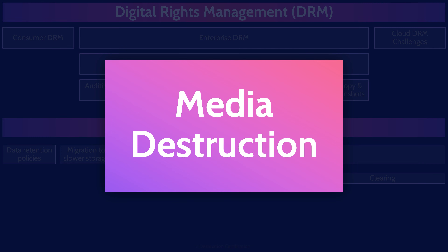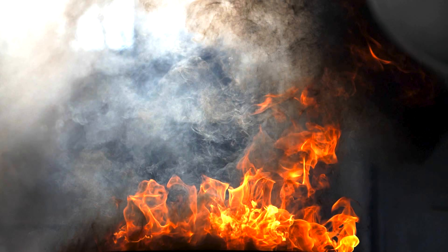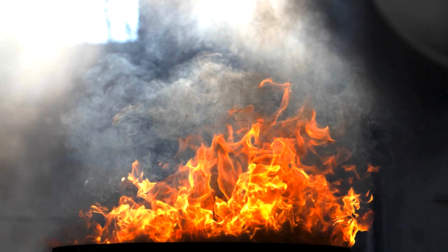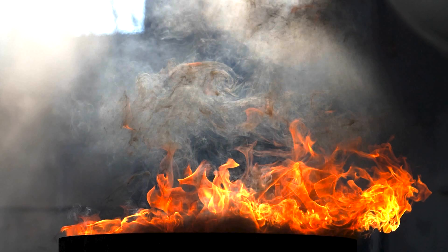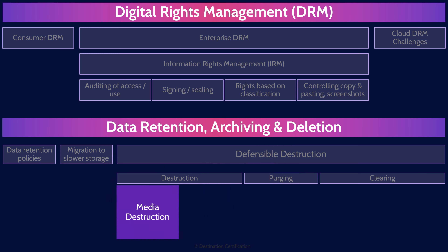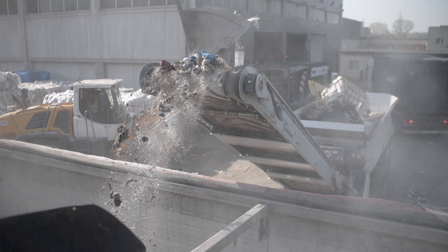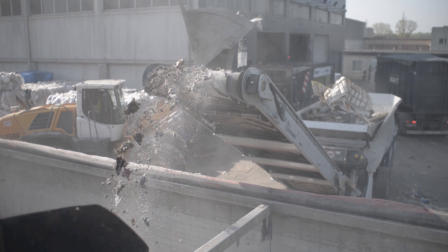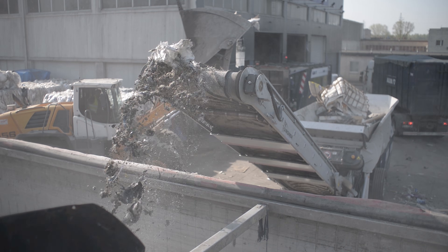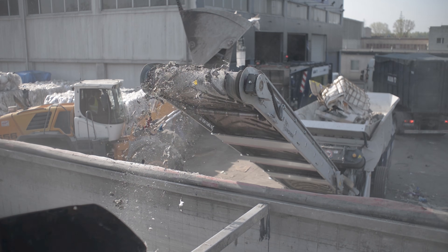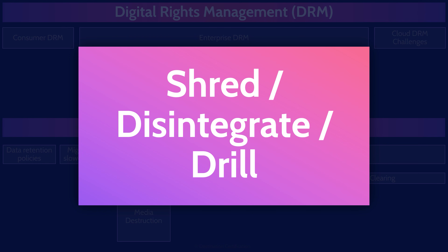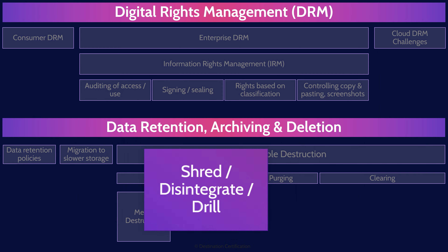Starting with the best techniques: the best is to physically destroy the media — ideally melt the hard drive or burn it to the point where all that's left is smoke and a puddle of metal; there's no way you're getting that data back. The next best method is to shred, disintegrate, or drill a hole in the media. These are not nearly as good because with the right tools it's still possible to read data off shreds of a hard drive or one with a hole drilled in it, but still better than nothing.